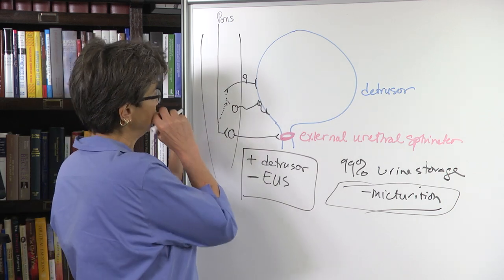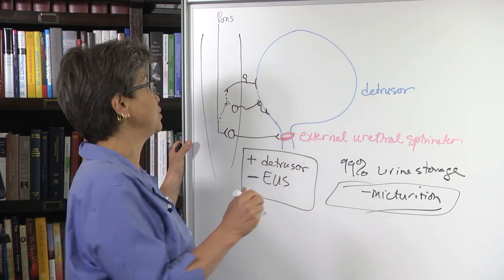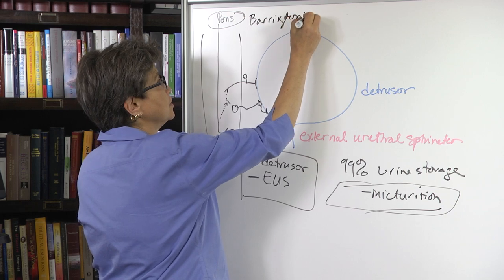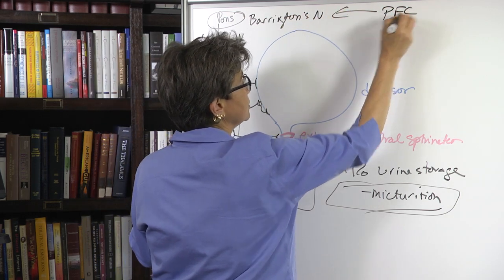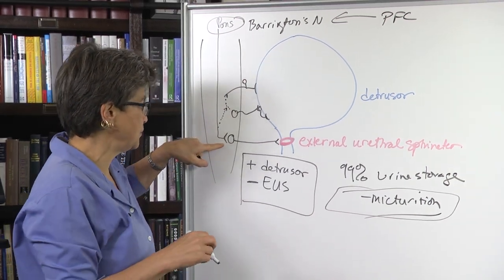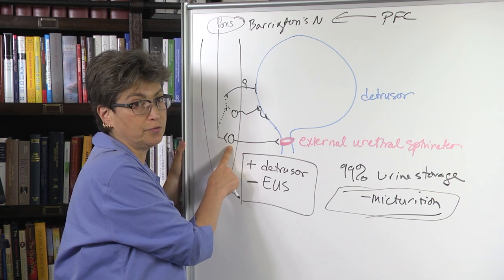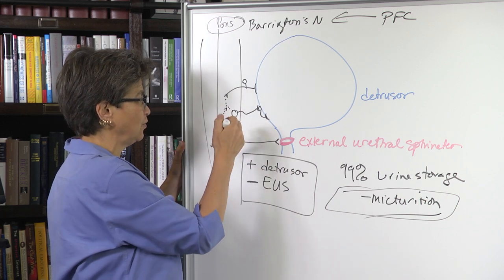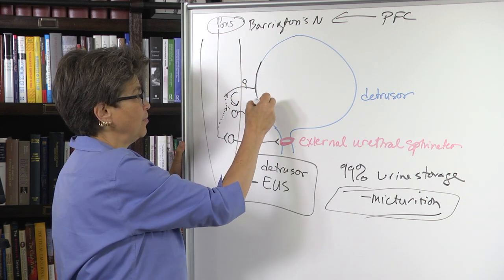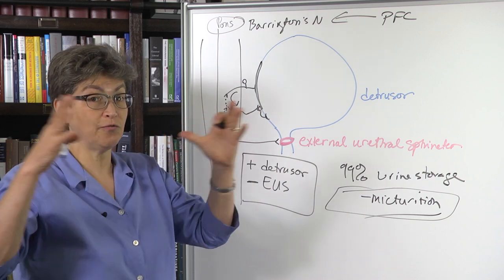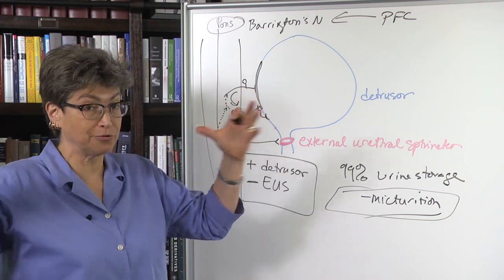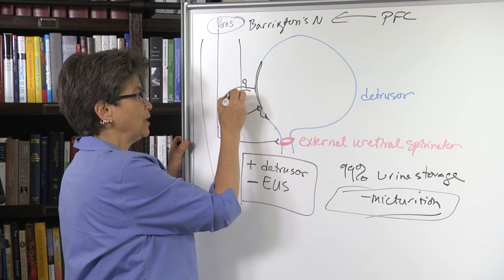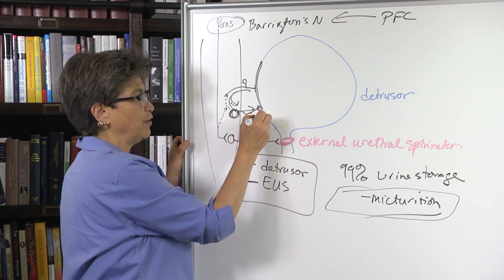What we think happens is that there are two different signals that combine to trigger micturition. One comes from the pons, and this is an area called Barrington's nucleus, and Barrington's nucleus in turn gets input from the prefrontal cortex. And Barrington's nucleus is somehow thought to come down here and turn off the external urethral sphincter and somehow also allow, when it turns off the external urethral sphincter, allow the information from the detrusor wall, sensory information that the detrusor is full, is stretched, that the bladder is full because the detrusor muscle is stretched, that information now gains access to the preganglionics, so that you can have this reflex afferent-driven contraction of the detrusor.